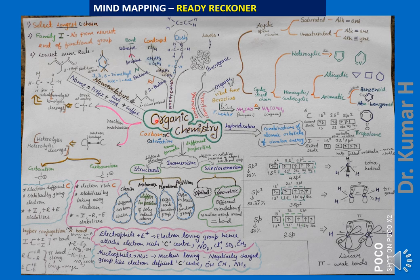Under nomenclature, the name of any compound has three major components. The root word tells the number of carbons; the suffix tells the family or functional group to which it belongs. If the main carbon chain has other groups besides hydrogen, those come under prefixes. So the name contains a root word, suffix for the main compound, and prefix for any substituents.